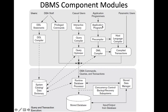So all the application programs are divided into two parts: the DML commands are separated from the rest of the program, they are compiled separately, and together they form the compiled transactions. These compiled transactions are given as queries or transactions to the runtime database processor. Then we have parametric users — bank tellers are parametric users, and mobile app users can also be called parametric users, as they simply supply parameters for those transactions.